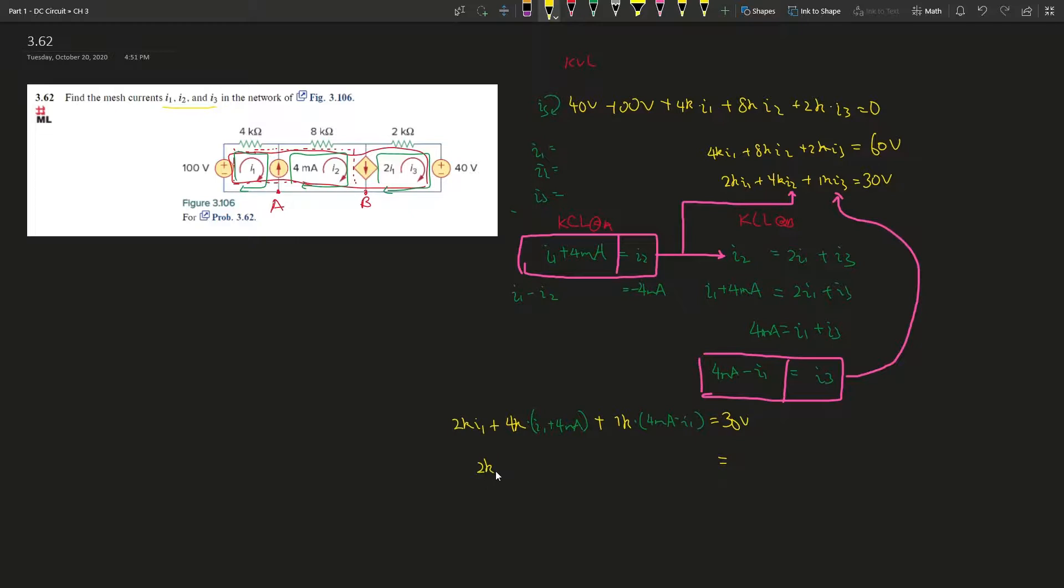Let's simplify things to find what i1 is. So 2k i1 plus 4k i1 plus, so k and milliamps, those are all 10 to the power of this is 10 to the power of negative 3, this is 10 to the power of 3, so this cancels out. So it's just 4 ohms times 4 amperes, that's 16 volts. Plus 1, so this here again, that's 4 volts, and then minus 1k i1 equals 30. Okay, so minus 20 both sides, it's going to give us 10 volts. And this is, so 2, 6 minus 1, so 5k i1.